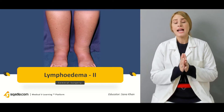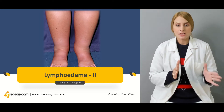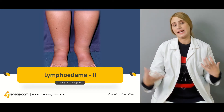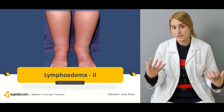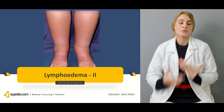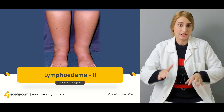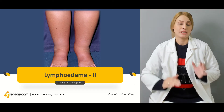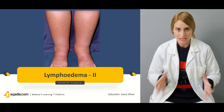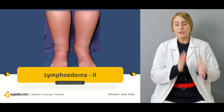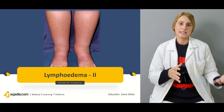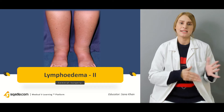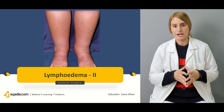In the previous lecture, we talked about the lymphatic channels and the function of the lymph, the production of the lymph, and how actually the whole of the lymph of the body is being drained into the larger ducts. We also discussed about the mechanism — what actually has to do with the hydrostatic and the oncotic capillary pressure.